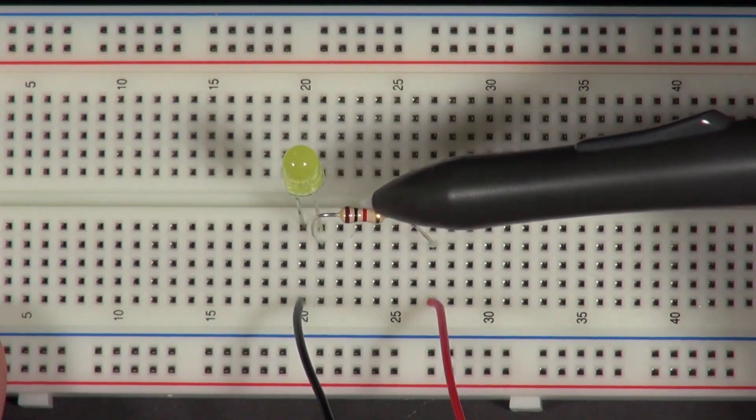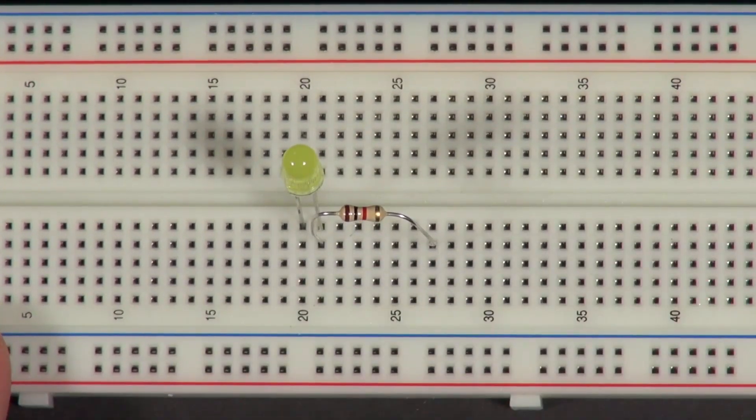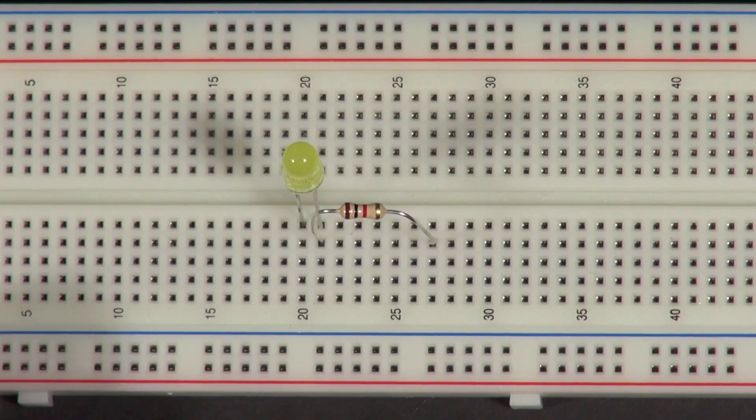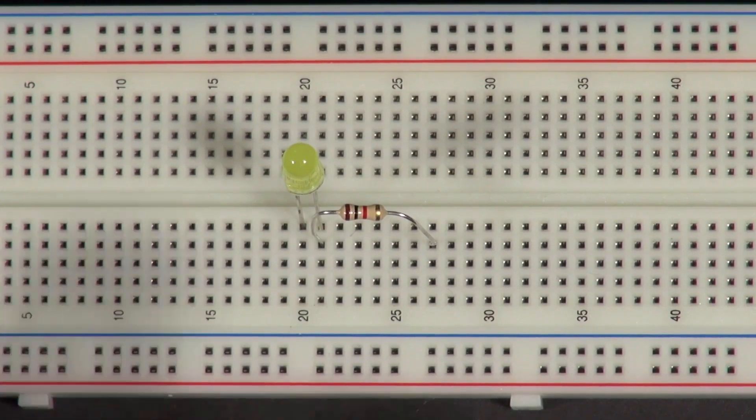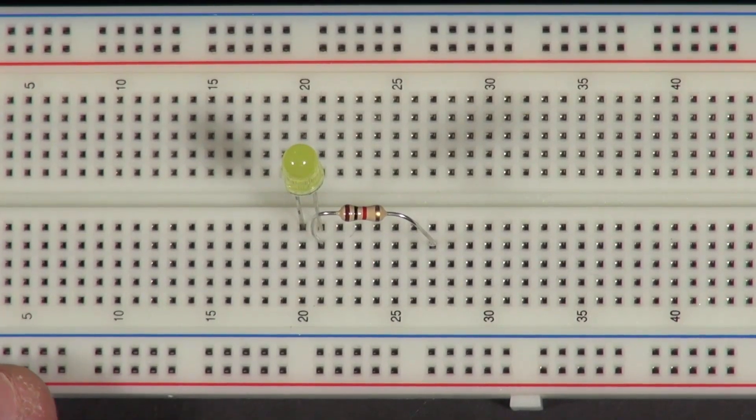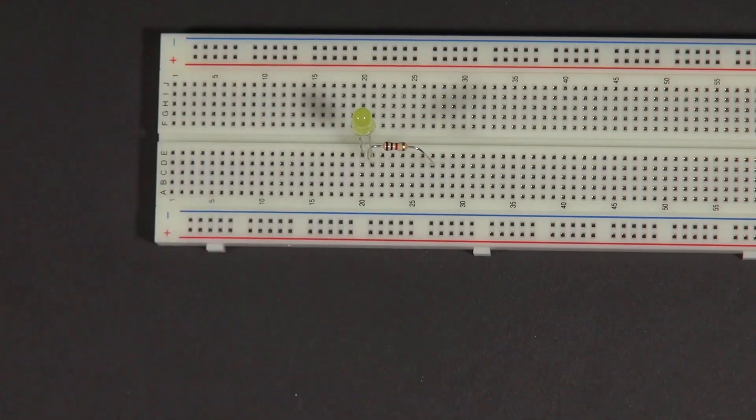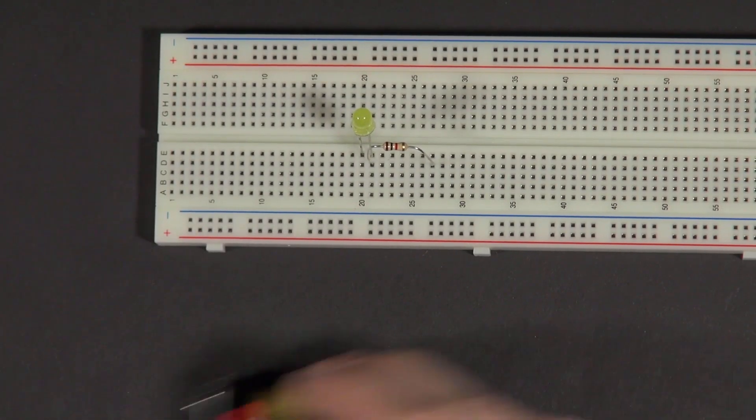But now that we have this resistor in here, we don't need that precise voltage source anymore. We can look at some other options, which is great if you want to build this at home and you don't happen to have a very expensive power supply. One of the most convenient options is a battery.